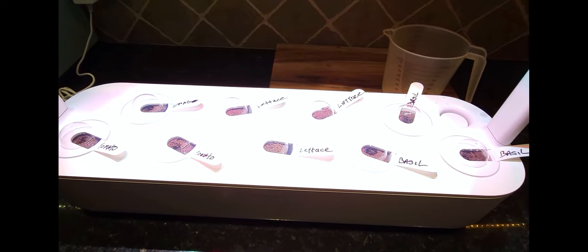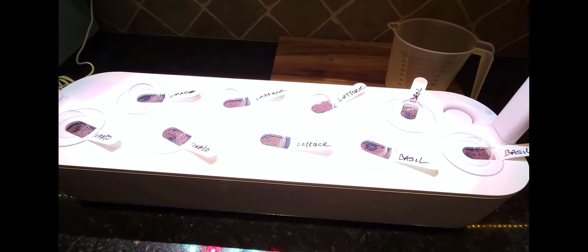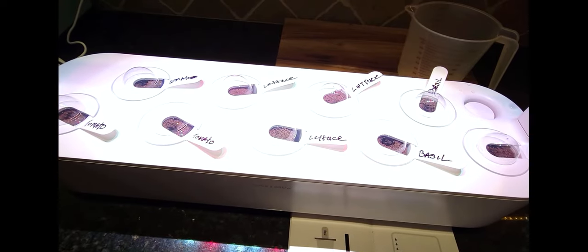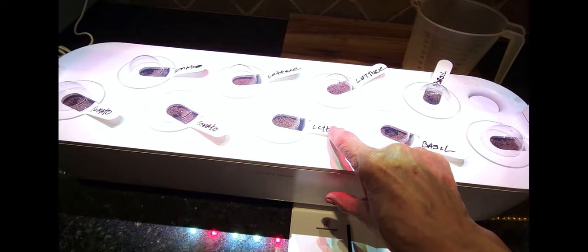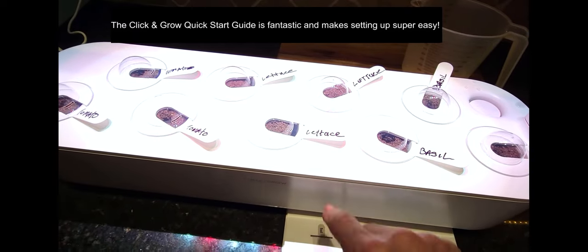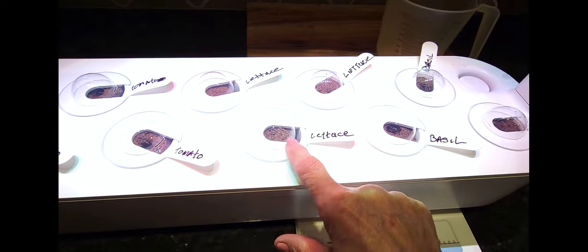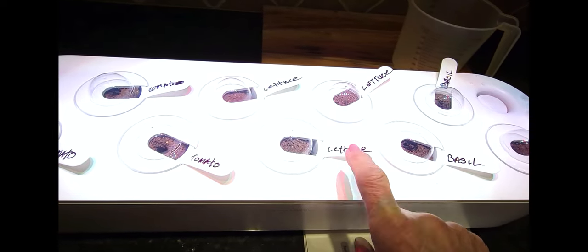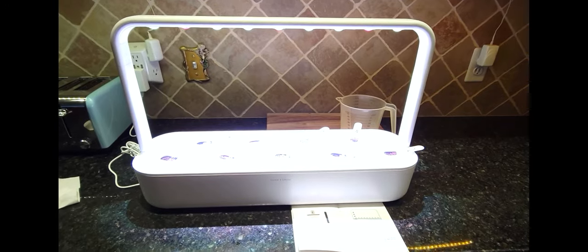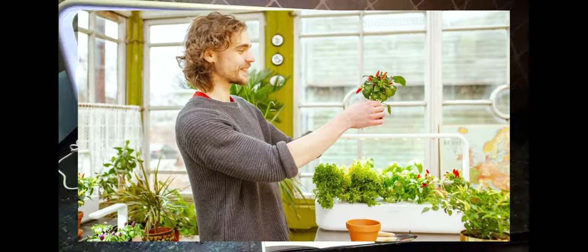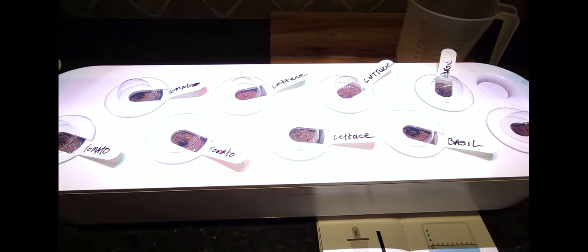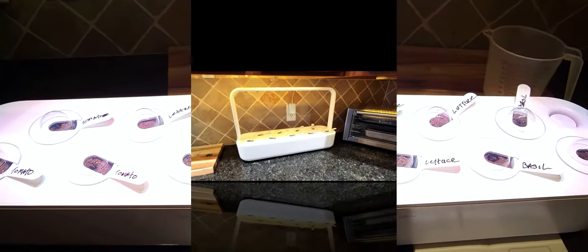I didn't really watch any videos on how to use it. I just used my handy little quick start guide and it was very easy to do. You can also label them. I was supposed to use a marker that was washable and I grabbed a Sharpie, but I'm sure I'll be able to get that off or put a sticker over it. When you're labeling what's in your little pod, make sure that you use either a sticker or a washable marker. Now I have everything up and ready to go. I'm going to move this over here so it has its own little area on my kitchen countertop. I'm going to be so excited to see my lettuce, tomatoes, and basil grow.